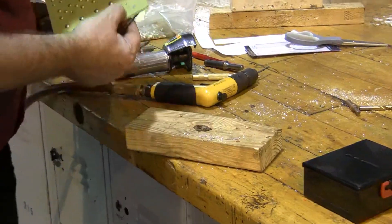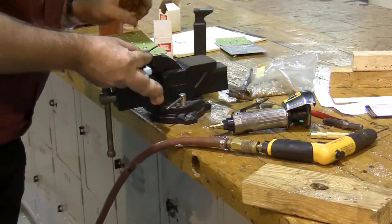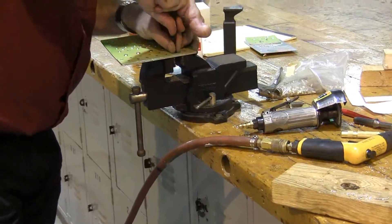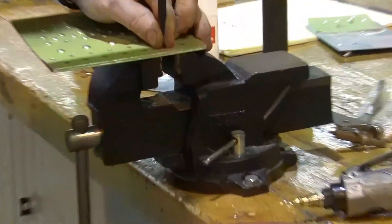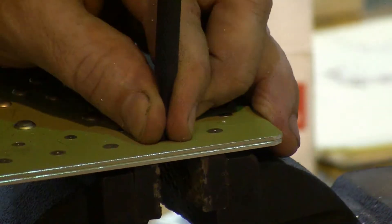Now I've got to tap it out again. Tap the bucked tail, is what it's called, out of that rivet. There it is.